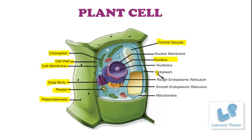Next is the cytoplasm — the scattered mass present inside the cell between the nuclear membrane and the plasma membrane. It is generally shown as dotted structures in between. These dot-like structures present all over the cell, between the plasma membrane and the nuclear membrane, is what we call the cytoplasm.